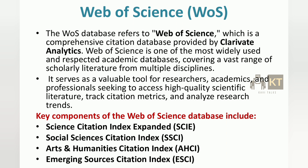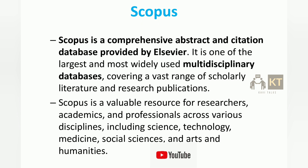Key components of the Web of Science database include the Science Citation Index Expanded (SCIE), Social Sciences Citation Index (SSCI), Arts and Humanities Citation Index (AHCI), and Emerging Sources Citation Index (ESCI). What is the Scopus citation database?